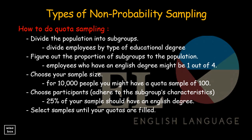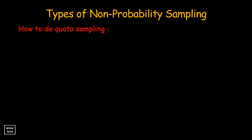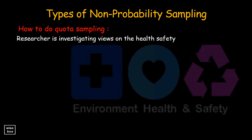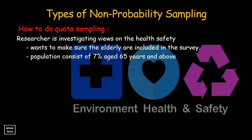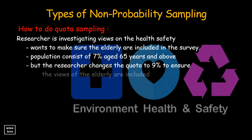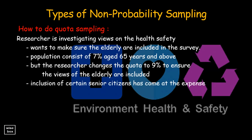The selection process continues until your quotas are filled. For example, a researcher investigating views on health safety wants to ensure the elderly are included in the survey. The population may consist of 7% aged 65 years and above, but the researcher changes the quota to 9% to ensure the views of the elderly are included. The inclusion of certain senior citizens has come at the expense of a truly representative sample.